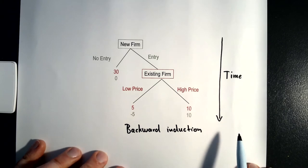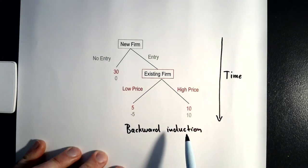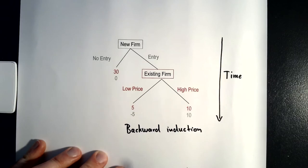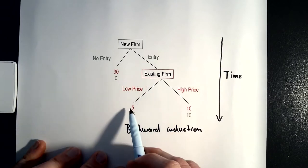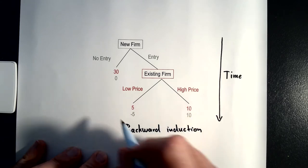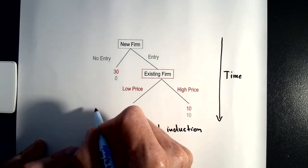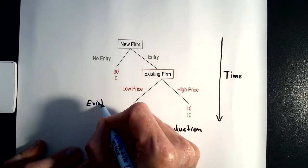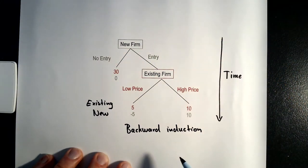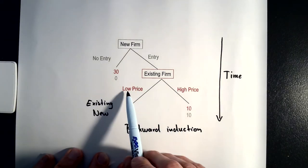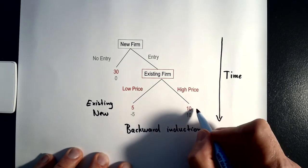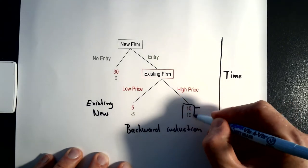Consider the situation where the new firm entered the market and we are now at the last node, where it is the existing firm needing to make a decision. Note that the existing firm's payoff is five when it prices low or ten when it prices high. The payoffs shown are the existing firm on top and the new firm at the bottom. So if the new firm entered the market and the existing firm has to decide whether to price low or high, it is actually in the best interest of the existing firm to price high.